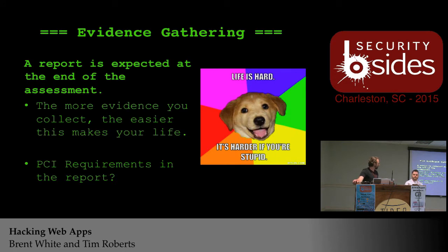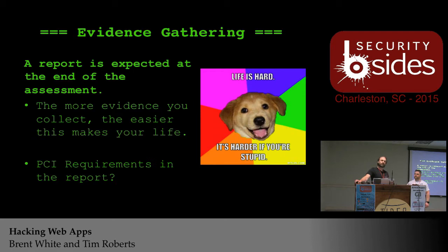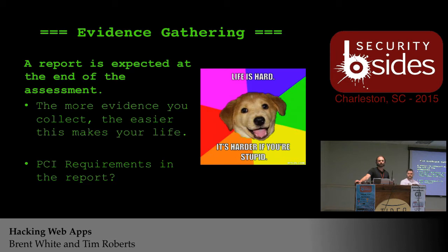As far as documentation goes, a QSA once approached Brent and said a common issue is that a pen test report will come in for a PCI requirement and it doesn't mention anything about PCI, doesn't have the OWASP checklist, and doesn't have anything like that in the report. So those reports get declined for PCI requirements. Whenever you're doing these reports, go back to the scope — why are you doing this, what does the client want — and try to tailor it to help them when presenting for auditors.